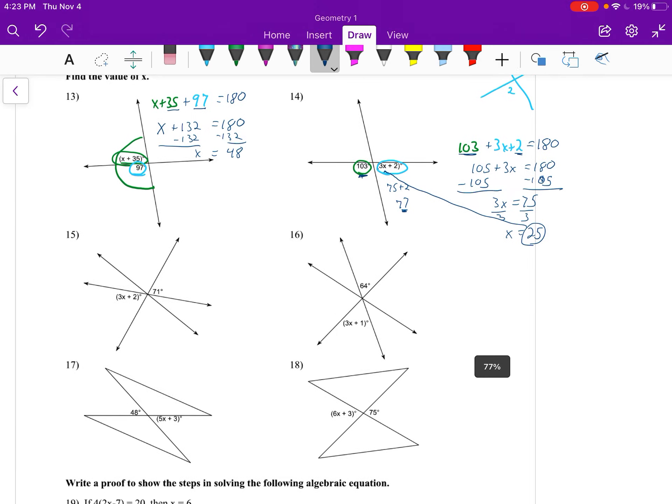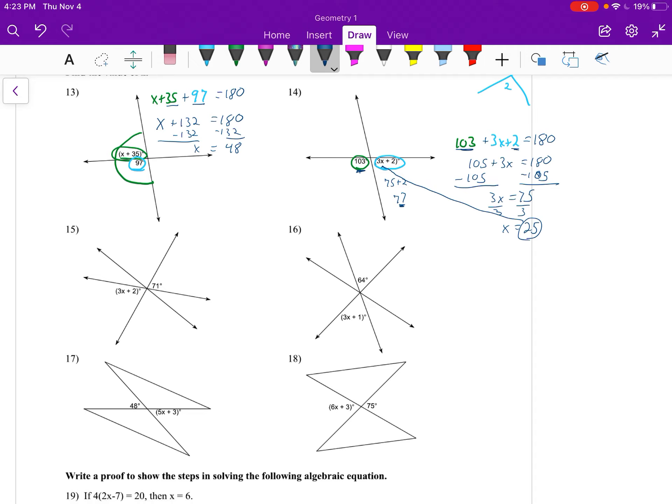All right, 15 through 18 now deals with vertical angles. There's some extra lines in some of these, but we really just want to deal with the lines or focus on the lines that form the angles. If we look at those, that's just two lines that intersect, and so those angles formed are vertical.